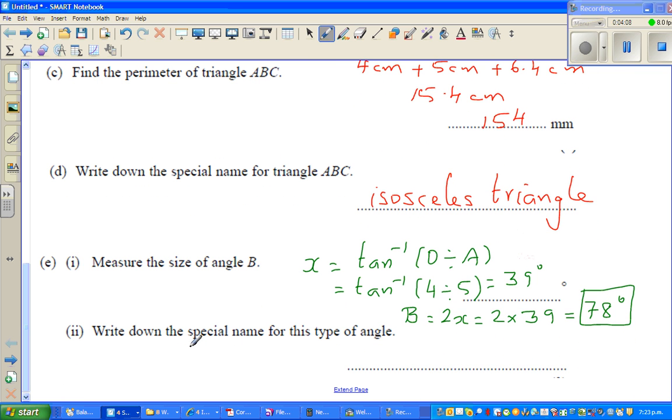Now the last question is, write down the special name of this type of angle. This angle is less than 90 and more than 0, so it's an acute angle.